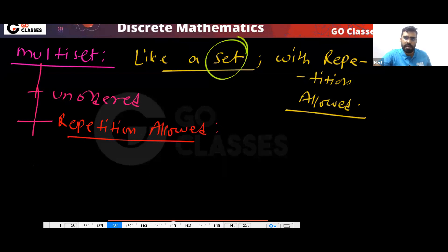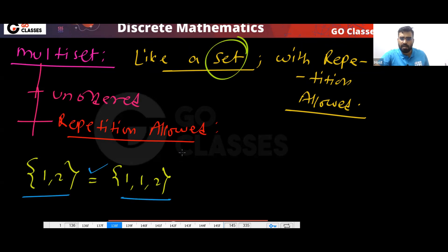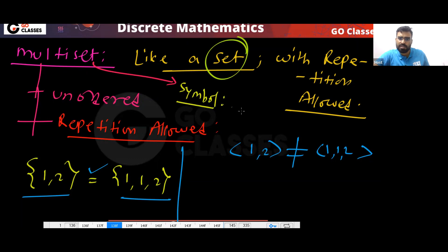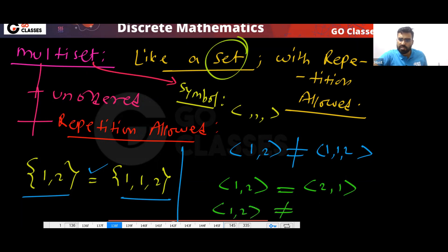For example, in a set, {1, 2} is the same as {1, 1, 2} — these are the same. But in a multi-set, {1, 2} is not the same as {1, 1, 2}. Also remember: order does not matter, so {1, 2} and {2, 1} are the same multi-set, but {1, 2} is not the same as {1, 1, 2}.